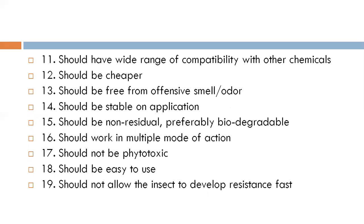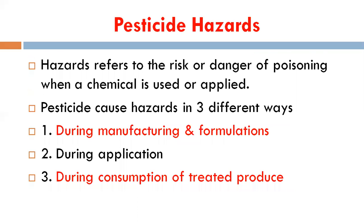An ideal pesticide should be free from offensive smell or bad odor to avoid irritation. It should be stable during application on plant parts or other commodities. It should be non-residual or preferably biodegradable. It should work in multiple modes of action and should not be phytotoxic. It should be easy to use and should not allow insects to develop resistance rapidly. These are more than 19 properties of a good ideal pesticide.